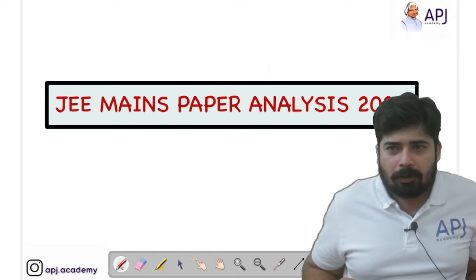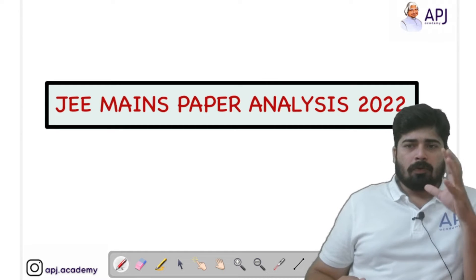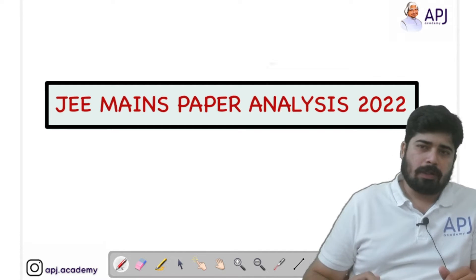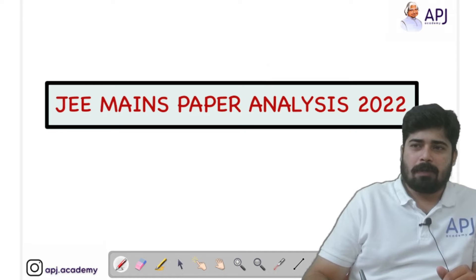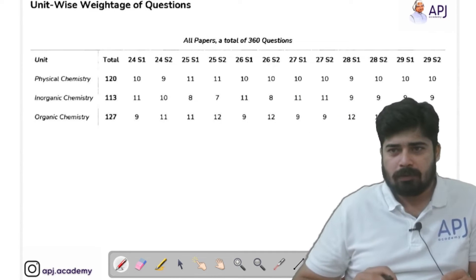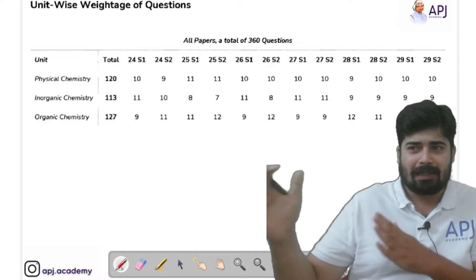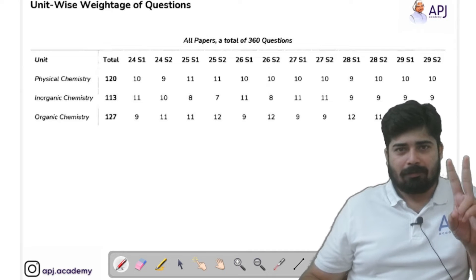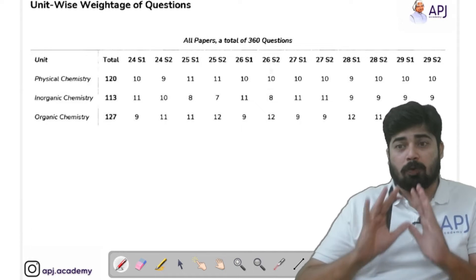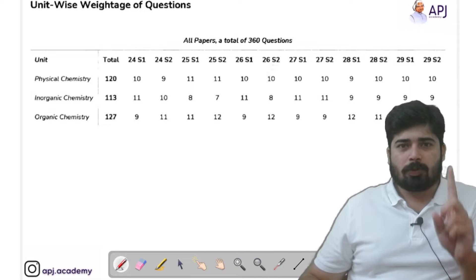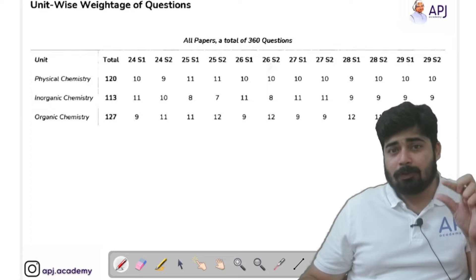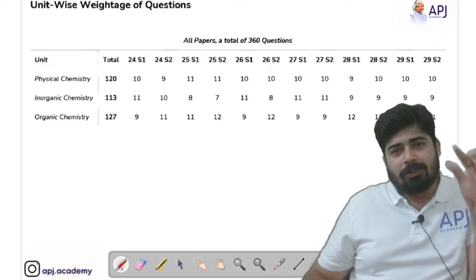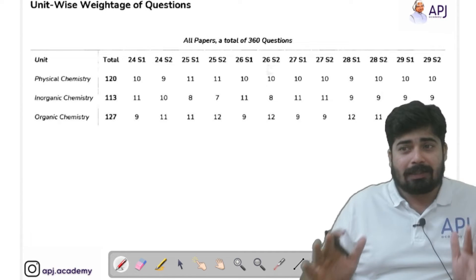Now coming to the main segment of this video: JEE Mains paper analysis 2022. The exam started from June 24th and ended on June 29th — six days, two sessions per day. In total we have 12 question papers. Each paper carries 30 questions from chemistry, so in total we have 360 chemistry questions. I am discussing only chemistry in this video.